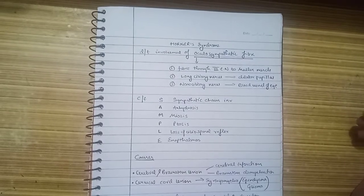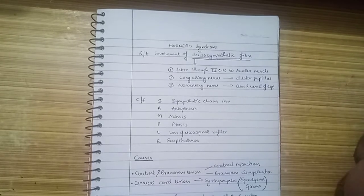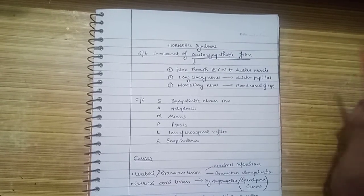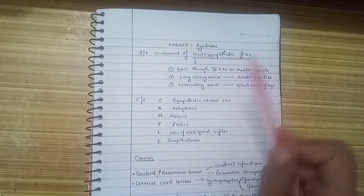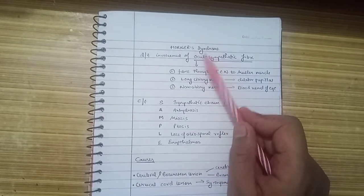Hello everyone, in this video we are going to talk about Horner's syndrome. This condition is seen due to cervical sympathetic chain involvement and there is involvement of oculosympathetic fibers, that is the sympathetic fibers that supply in and around the eyeball.